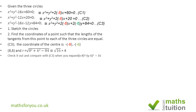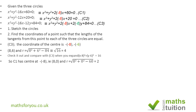You can verify this by expanding (x − 8)² + (y − 6)² in standard form — you should get the same equation. For C1, the center is (−(−8), 0) = (8, 0) and the radius is √(8² + 0² − 60) = √4 = 2. For C2, the center is (6, 0) and the radius is 4.